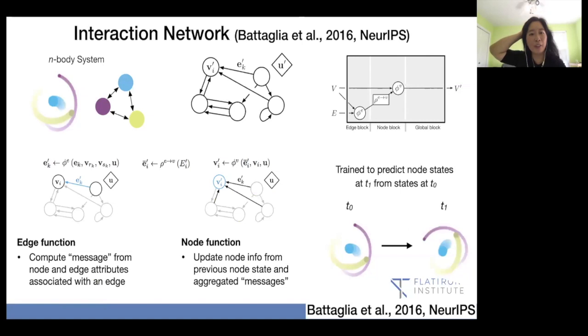And Miles already shown earlier all these equations or basically simple demonstration of what these different properties are. But just to remind you, we have the nodes and edge functions. The edge functions being here, it computes the messages from the nodes and the edge attributes associated with an edge. So you can update the nodes. You can update the node info from the previous node state and aggregating them all the edges. And the edges can be bi-directional or single-directional. And you're training it to predict the node states at T1 from state equals to T0. So next step. We do not talk about the global block in this particular example, but you've heard it from Miles before that you can include that, such as the total energy of the system or the total angular momentum. You can possibly also think about some of the conserved quantities that people usually talk about such as Lagrangian or Hamiltonian.